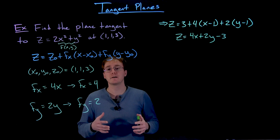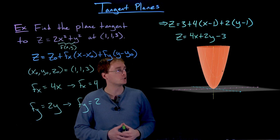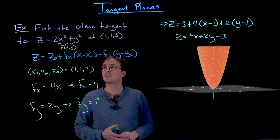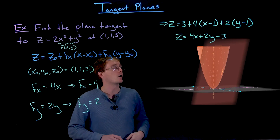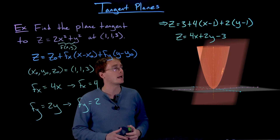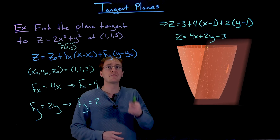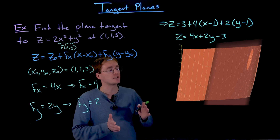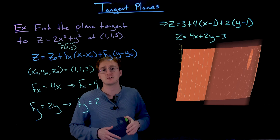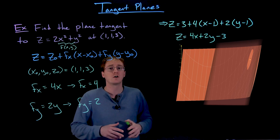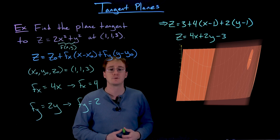Just to verify, we graph our surface z equals 2x squared plus y squared on GeoGebra, and then also graph our plane z equals 4x plus 2y minus 3. Zooming in at the point (1, 1, 3), we can see the tangent plane is just touching our surface at this point. Traveling in the x or y direction away from this point, the tangent plane is approximating how our function travels in those directions.